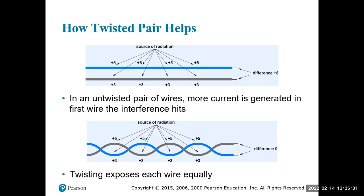The first truly digital telephones used Cat 3. By the time we got to 100 megabit data speeds, we were using category five, which has many more twists per given distance.